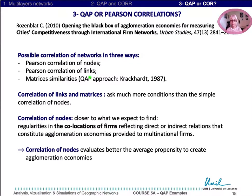But coming back to our initial question, we expect regularity of co-location of firms in order to reveal the agglomeration economies they can produce together. So nodes correlations are the right choice in order to evaluate the average propensity to create agglomeration economies.